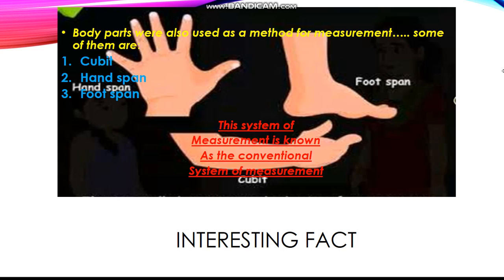Today we are going to study an interesting fact about the conventional system of measurement. The conventional system of measurement is a kind of measurement system that uses body parts for measuring something, like the cubit, the hand span, and the foot span.